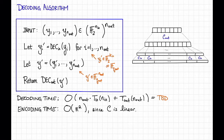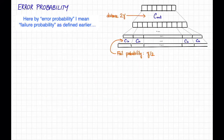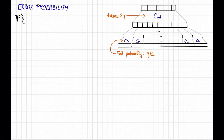So that is our decoding algorithm. We haven't yet said what the codes are actually going to be — we'll come to that. But first, let's analyze the error probability of this decoding algorithm in terms of the error probability of the inner code. Remember that C_out was chosen to have distance 2 gamma, and C_in was decided to have failure probability gamma over 2.